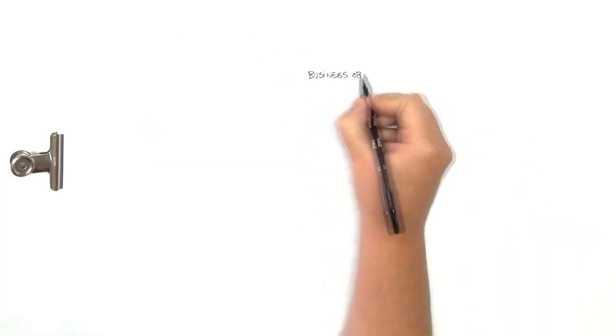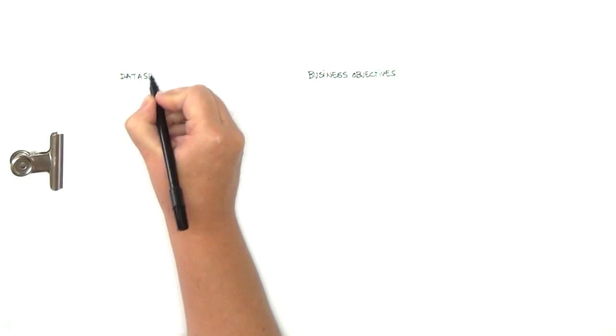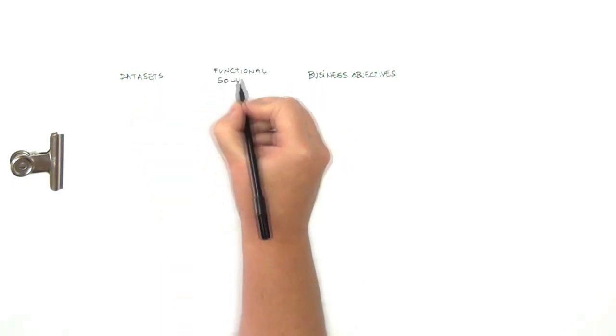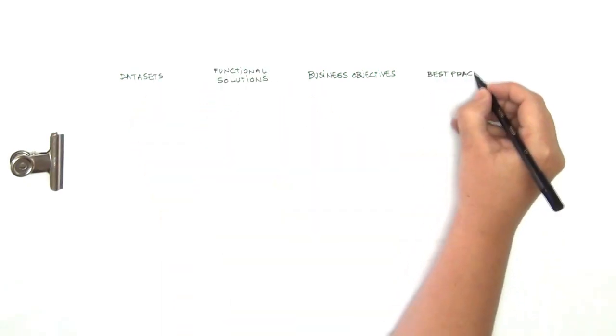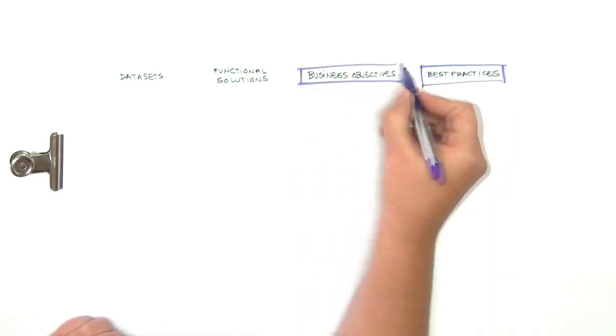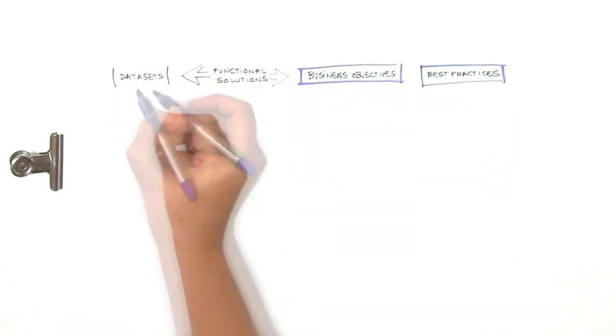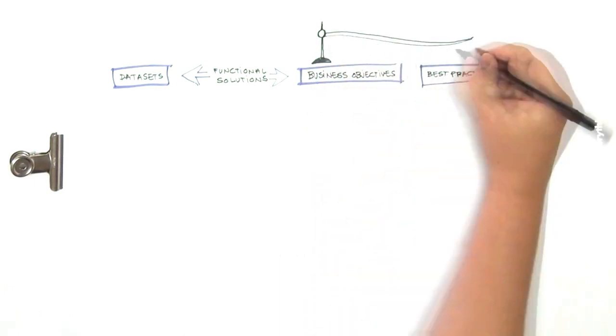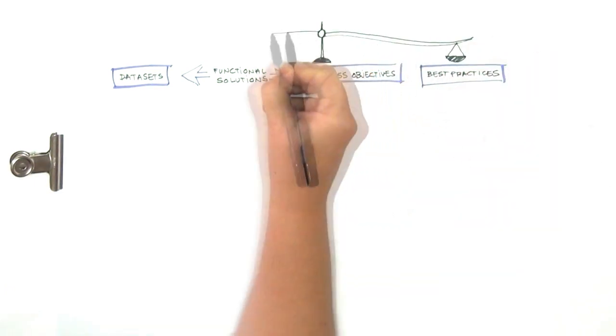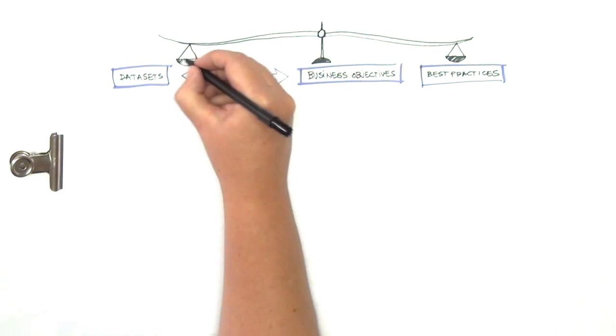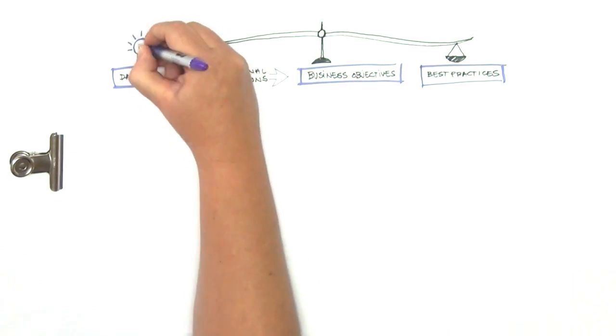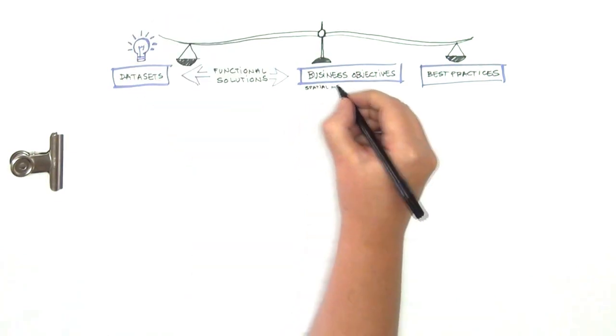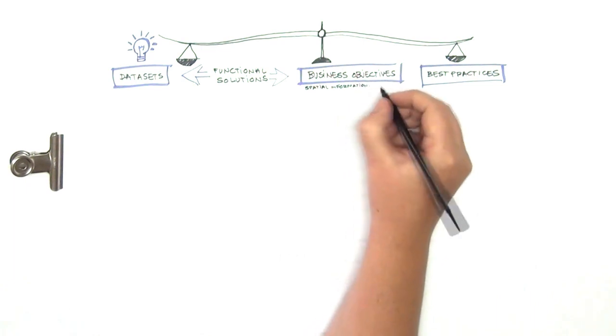In the Spatial Information Strategy, we deal with business objectives, geographic datasets, functional solutions and best practices. These are balanced with one another and one can imagine a scale with the business objectives, the pivot on which it hinges. In the case of the NPC, the business objectives are the nine challenges which we relate to datasets and solutions.